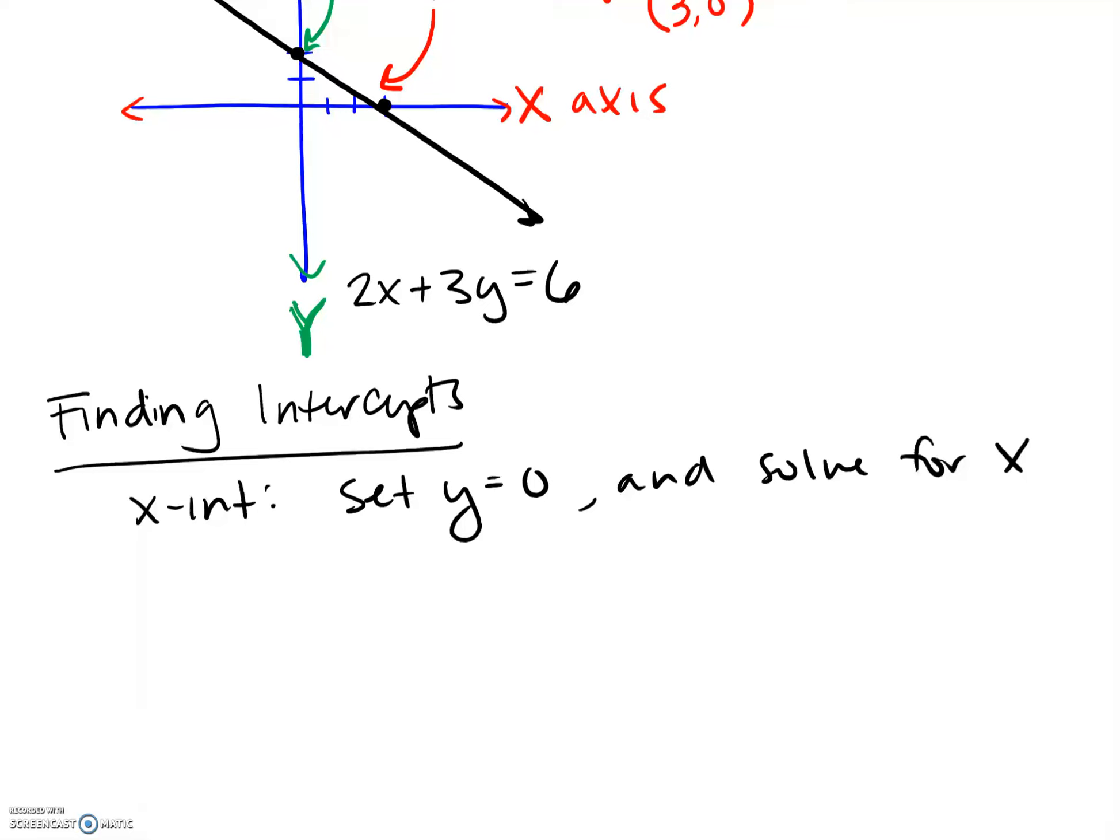This is true because when your y is equal to zero, you haven't moved up or down, right? This is your y up and down. So when y is zero, you are on the x-axis and you're able to find that point where you cross it. So that's really what you're looking for with your intercepts.